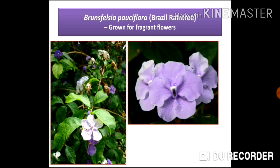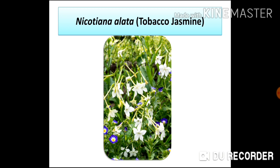The second ornamental plant of family Solanaceae is Brunfelsia pauciflora, commonly called Brazil rain tree, grown for its fragrant and magnificent flowers. The third ornamental plant is Nicotiana alata, commonly known as tobacco jasmine, which has attractive white flowers.